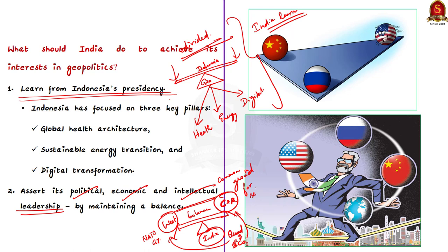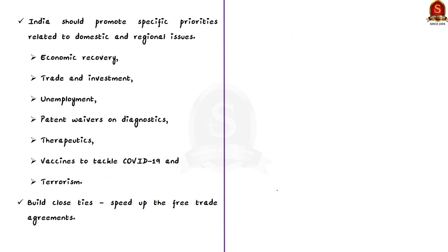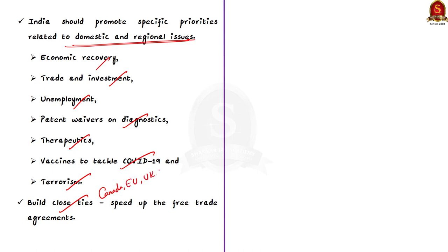While performing this balancing act, India should simultaneously promote its specific priorities related to domestic and regional issues — such as economic recovery, trade and investment, unemployment, patent waivers on diagnostics, therapeutics and vaccines to tackle COVID-19, and terrorism. Apart from this, India can build closer ties with many G20 countries including the European Union, United Kingdom and Canada, which would speed up the process of realizing free trade agreements.